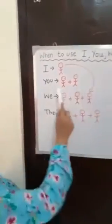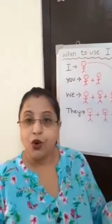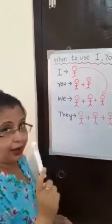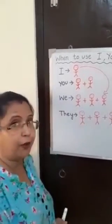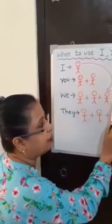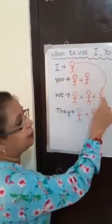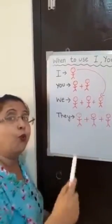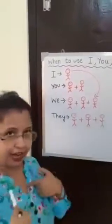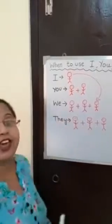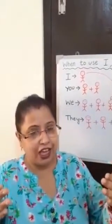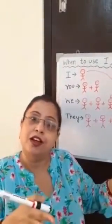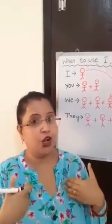When do we use we? We use we when I'm talking about more than one person, and I am also included with them. When I'm talking about more than one person and I myself am included in that group, we say we.